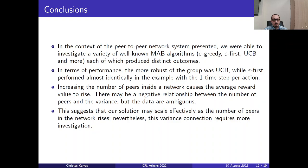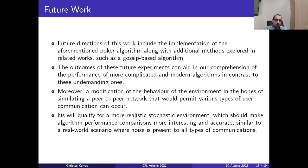There may be a negative relationship between the number of peers and the variance. This connection requires further investigation. This suggests that our solution may scale effectively as the number of peers in a network rises. However the variance connection requires more investigation.